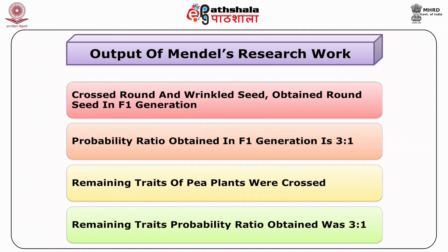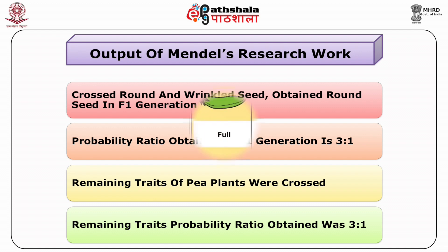Mendel's data — the output of Mendel's research work. Mendel crossed round and wrinkled seeds. He obtained round seeds in the F1 generation, which means the round trait is dominant over the wrinkled trait. The probability ratio obtained in the F1 generation is 3 to 1 for round and wrinkled seeds. In the same manner, the remaining traits of pea plants were crossed. One allele in each pair was dominant over the other, and for all remaining 6 traits the probability ratio obtained was 3 to 1.